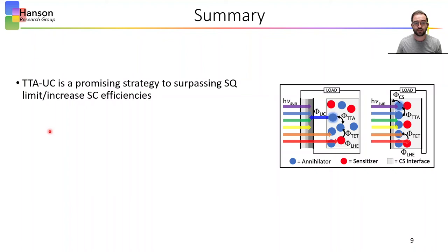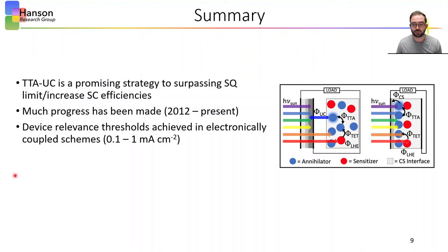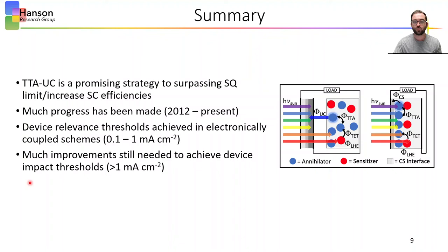In summary, TTA-UC is a promising strategy to increase solar cell efficiencies and potentially surpass the Shockley-Queisser limit by overcoming transmission losses. Much progress has been achieved on this front since the first example in 2012. While recently the electronically coupled schemes have breached the device relevance threshold, no TTA-UC solar cell has yet to reach photocurrents high enough to impact current solar cell performance of any significance. Many improvements are needed to reach J_UC values greater than 1 mA/cm² and increase current solar cell power conversion efficiencies by at least 1%.